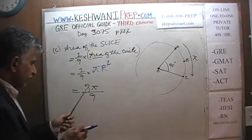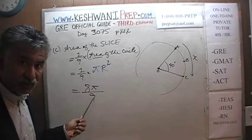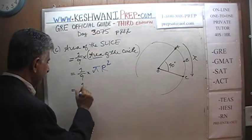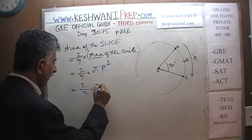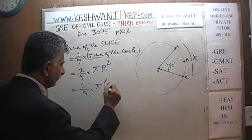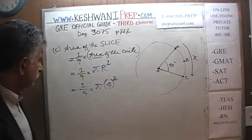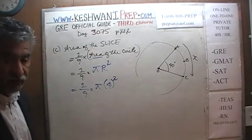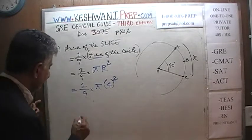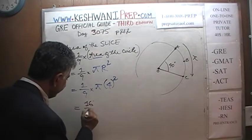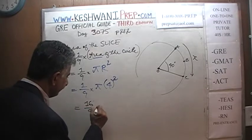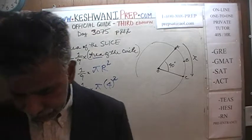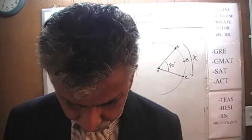Pi r squared. Let's do it again correctly: 1/9 times pi times r squared, which is 4 squared. And 4 squared is 16. So the area of the slice is 16 pi over 9.